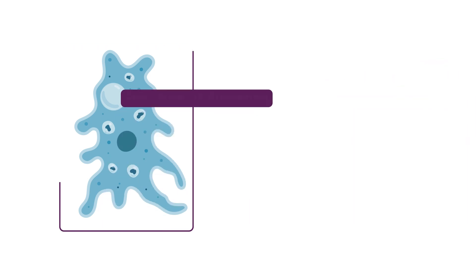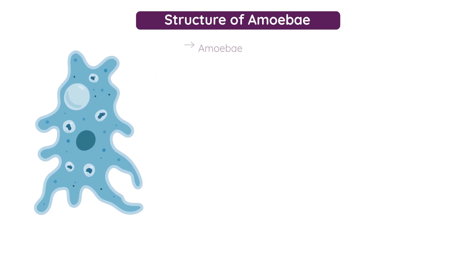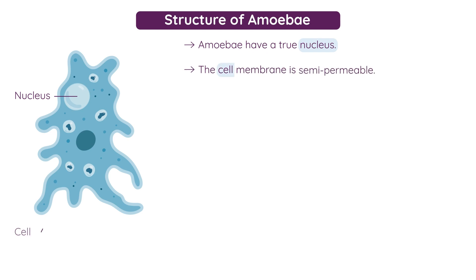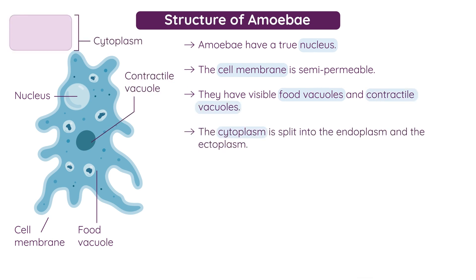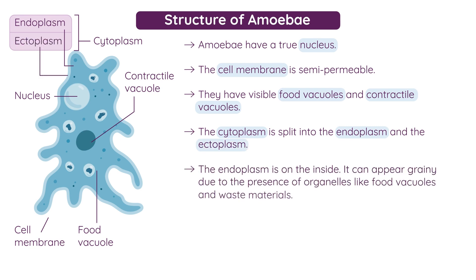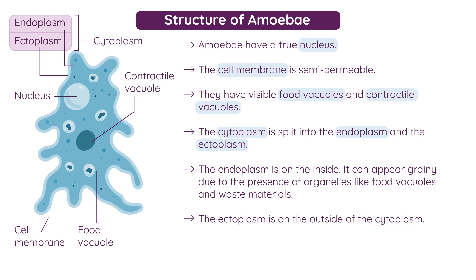So onto the structure of amoeba. As eukaryotes, amoeba has a true nucleus. The cell membrane is semi-permeable, and it will also have visible food vacuoles and contractile vacuoles. The cytoplasm in amoeba is split up into the endoplasm and the ectoplasm. The endoplasm is on the inside and can appear grainy due to the presence of organelles like food vacuoles and waste materials. The ectoplasm is on the outside of the cytoplasm, closest to the cell membrane. It is soft in places to allow for the development of pseudopodia, or false feet, for movement.